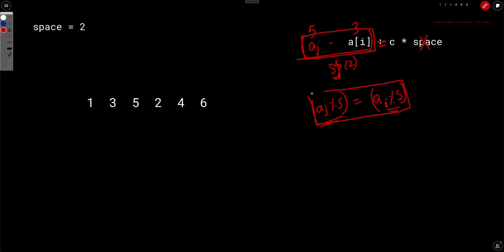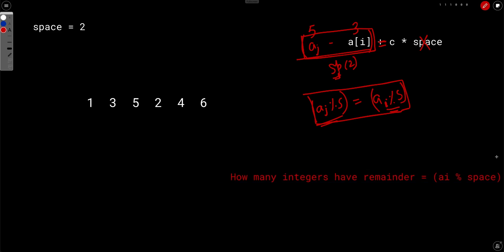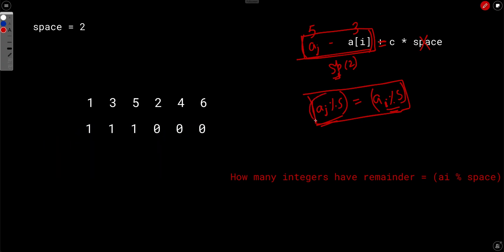Once we have this condition, the problem reduces to: for each ai, how many integers in the array have the same remainder as ai modulus space? Since space is constant, we can convert the entire array to remainders. In our example with space=2: 1→1, 3→1, 5→1, 2→0, 4→0, 6→0.